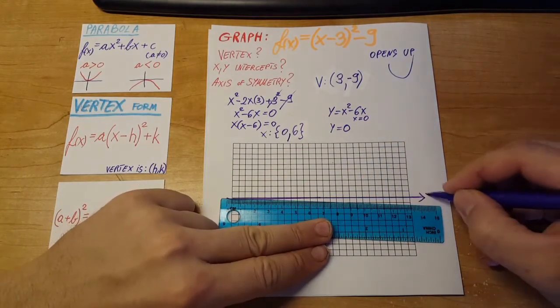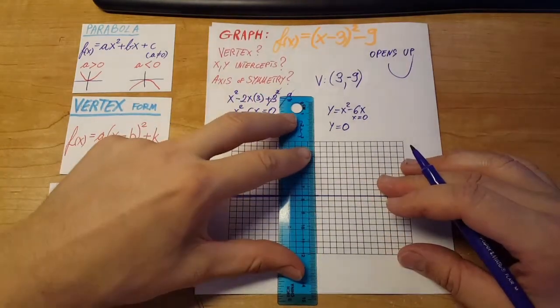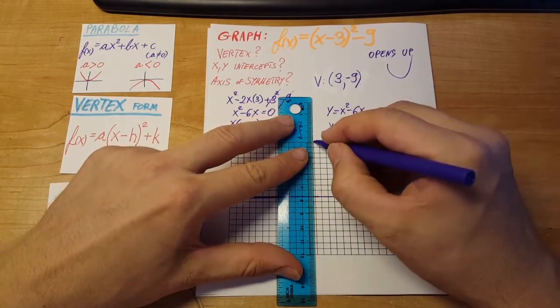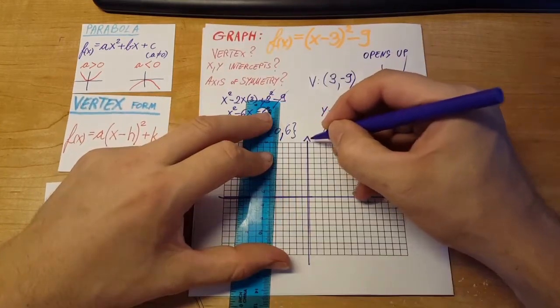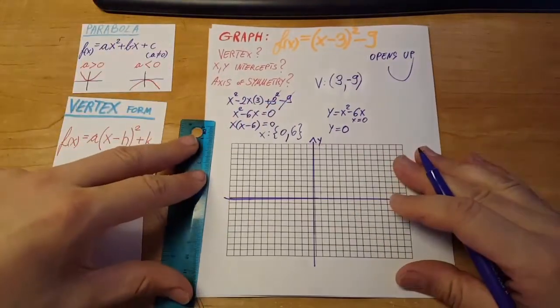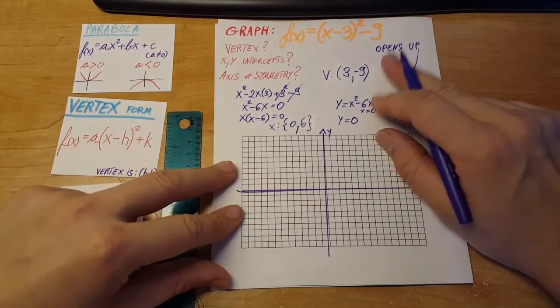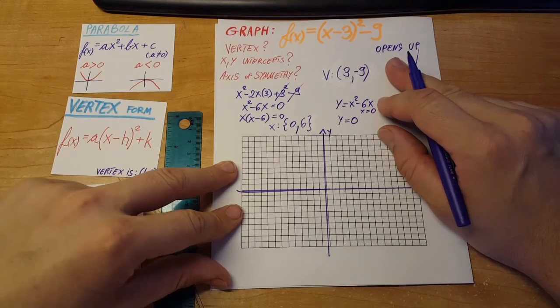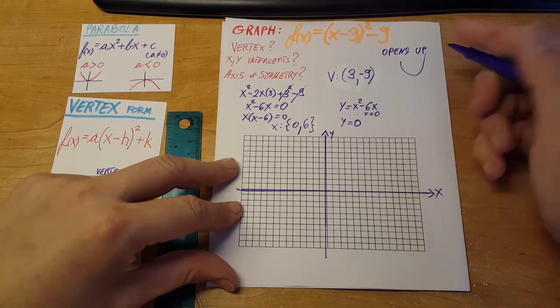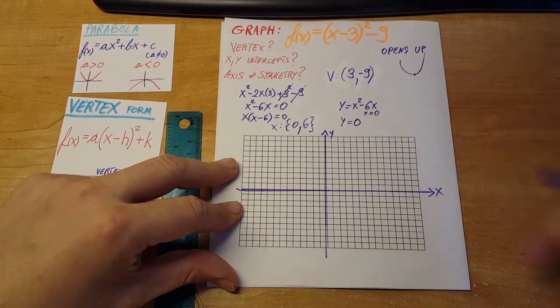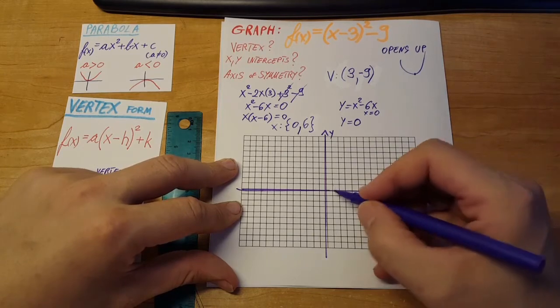This is our x axis, y axis. Ok. Our parabola opens up, so its vertex will be on the bottom, like this. So let's mark the vertex first.